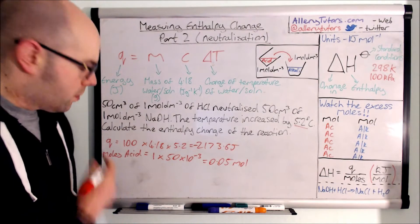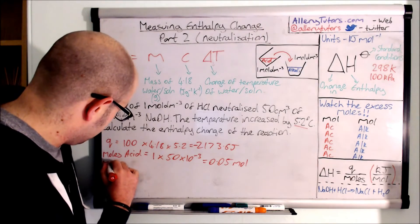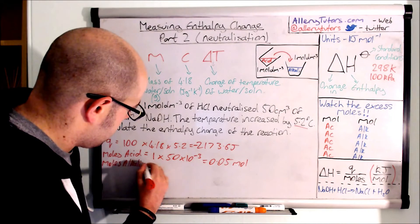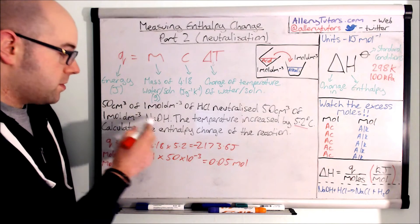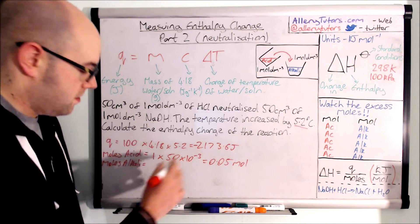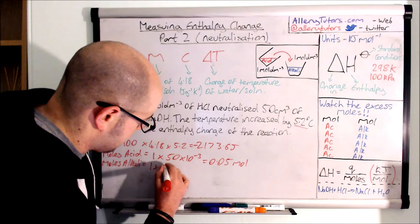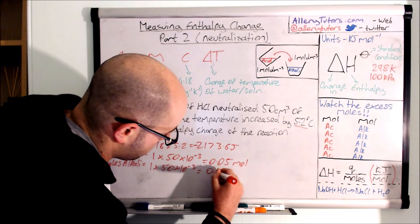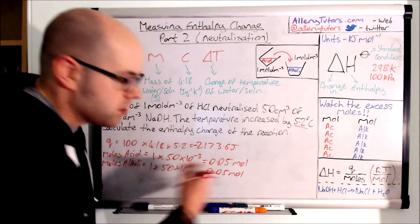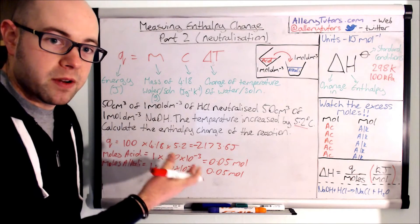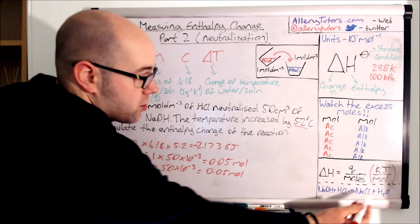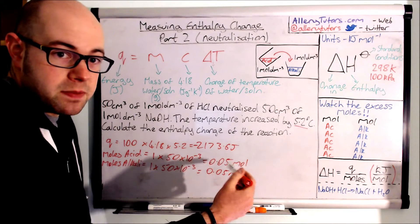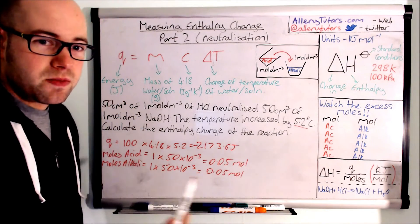Now we do exactly the same for moles of alkali. We have 1 mol/dm³ sodium hydroxide and 50 cm³, so again it's 50 × 10⁻³ = 0.05 moles. We don't have an excess — both have equal numbers of moles. Looking at the reaction, it's a 1:1 ratio, so we don't need to multiply any values by two. This is straightforward.